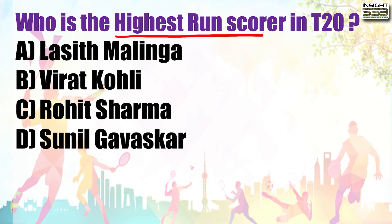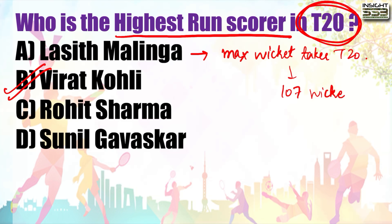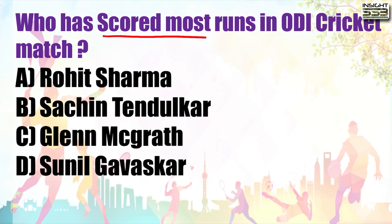Who is the highest run scorer in T20? Virat Kohli has the highest runs in T20 so far - over 3,000 runs from 2010 to 2021. And if we talk about Lasith Malinga, he is the maximum wicket taker in T20, having taken a total of 107 wickets till date. Again very very important.